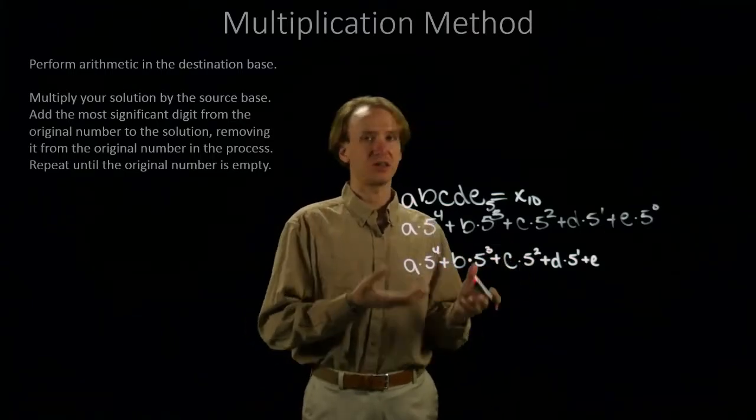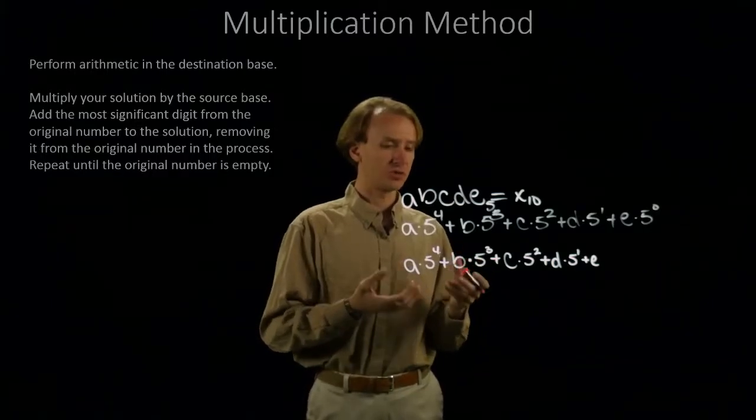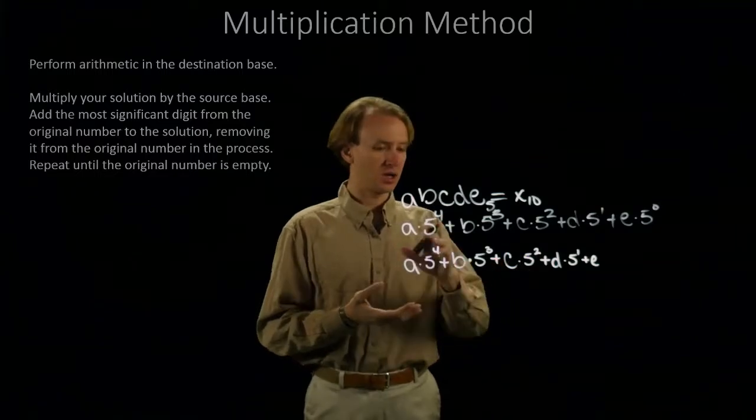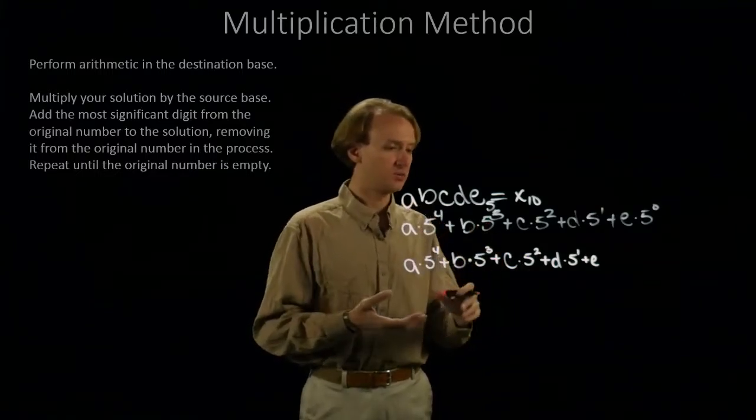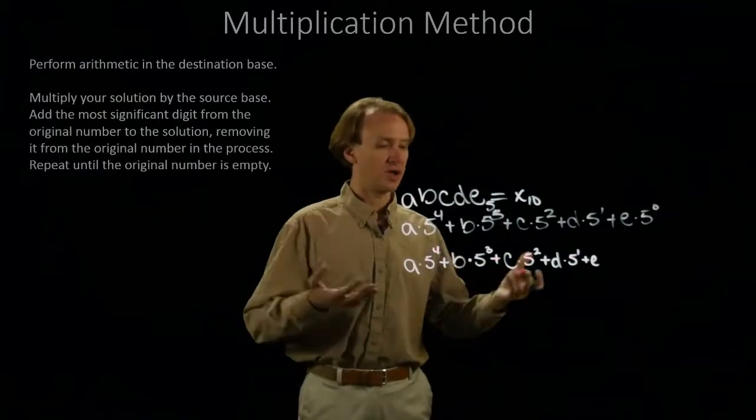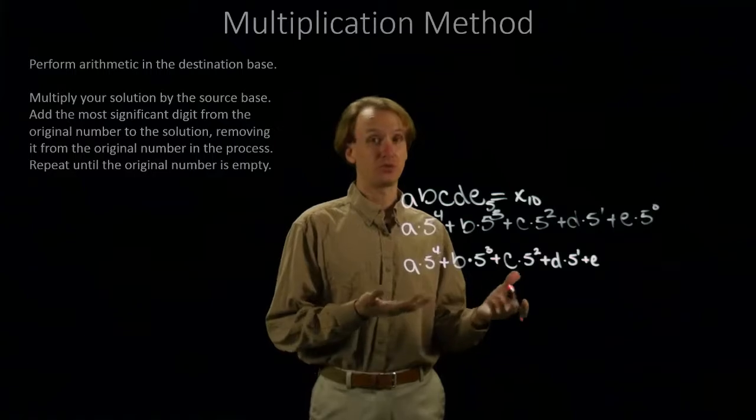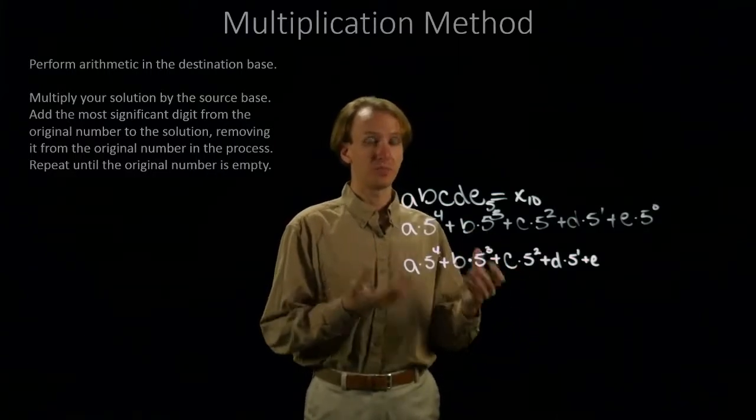But, as you can imagine, this method is a whole lot easier to do by hand because we have simple arithmetic to do. We're just multiplying by our base. I don't have to go worry about what is 5 to the 4th, what is 5 cubed. Even worse, if I have a huge base that I don't know what to do with, I can just do a whole bunch of multiplication. It's going to be long and ugly, but it's straightforward.